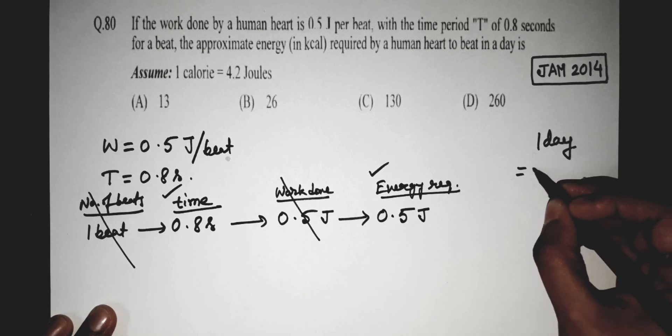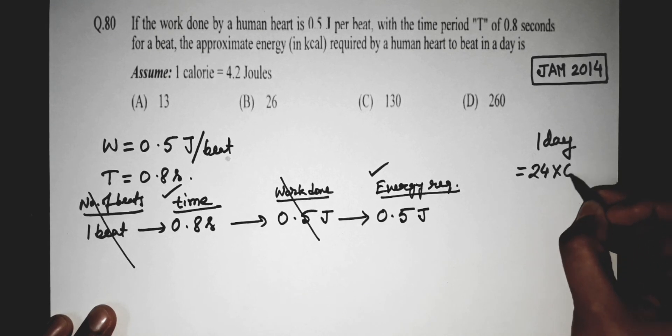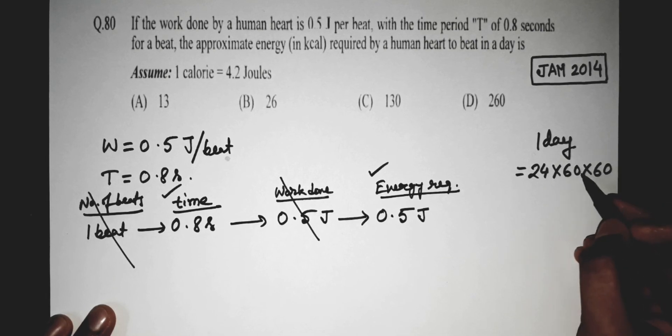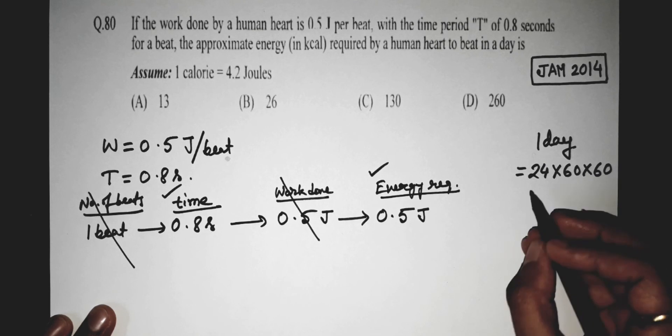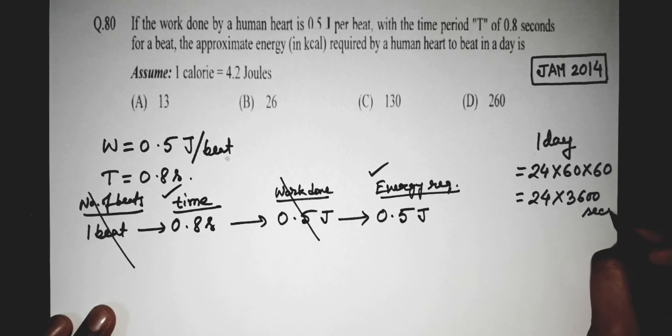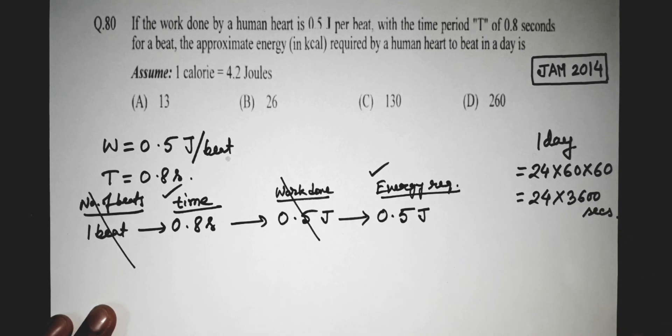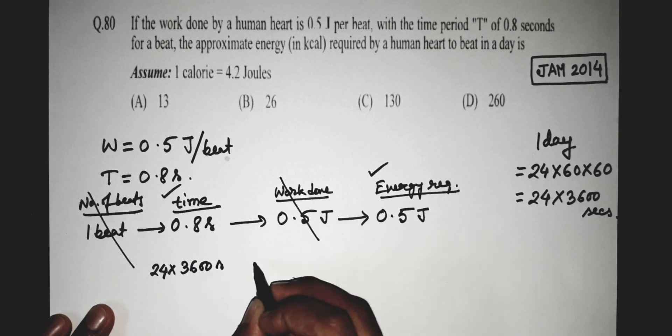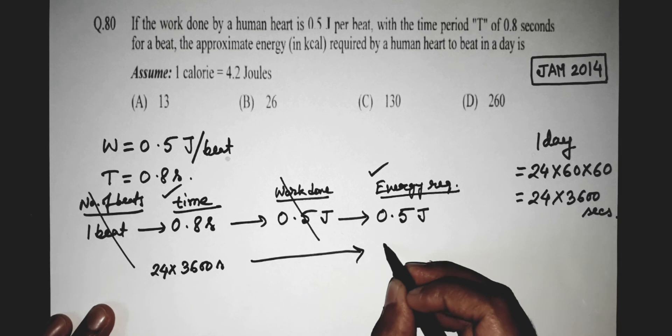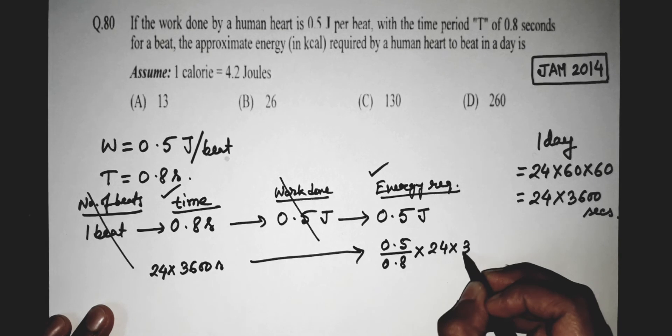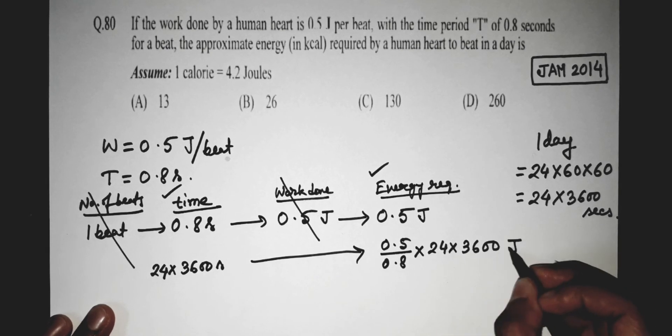So the number of seconds is: one day equals 24 multiplied by 60 multiplied by 60. Because one day equals 24 hours, one hour equals 60 minutes, and one minute equals 60 seconds. That means 24 multiplied by 3600 seconds. Now here, the energy required in 24 multiplied by 3600 seconds is 0.5 divided by 0.8 multiplied by 24 multiplied by 3600 joules.